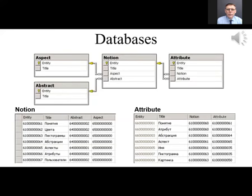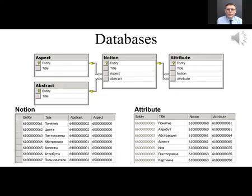The kernel diagram of the intelligent system database contains four tables: abstraction, aspect, notion, and attribute. Each record has common fields: entity, the global unique identifier, and title, the collective name of the entity. Links between tables are foreign keys. The global unique identifier consists of two parts: the record number in the current table, and the number of the current notion in the table of notions. Any entity in the notional model is a record in a database table with a unique global identifier.